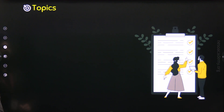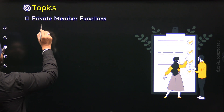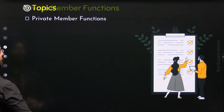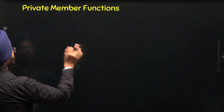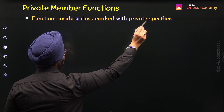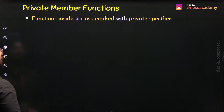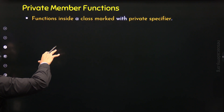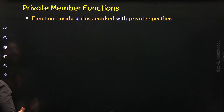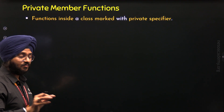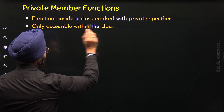There is only one topic: private member functions. Private member functions are functions inside a class marked with a private access specifier. We are talking about member functions — functions that are provided within the class — and they are private, meaning they are only accessible within the class.